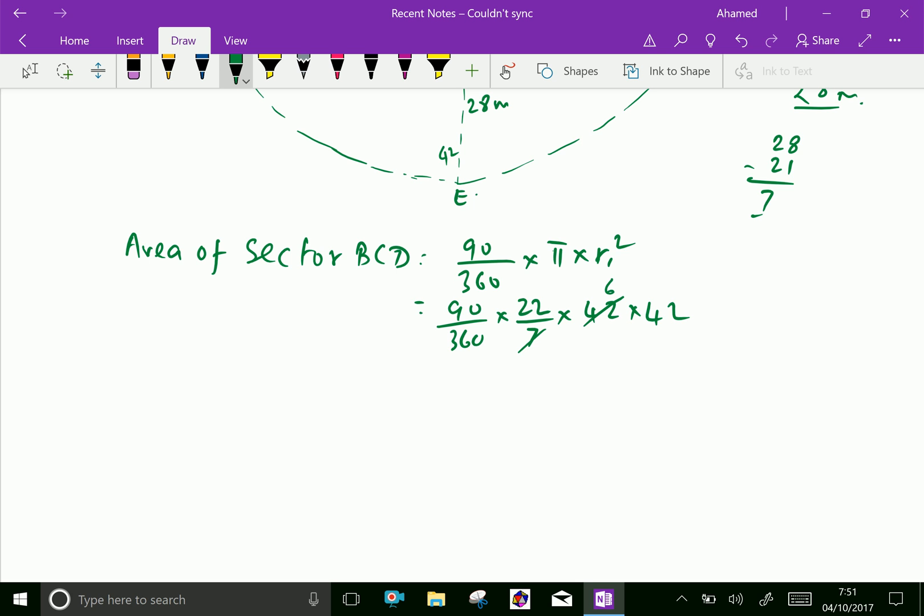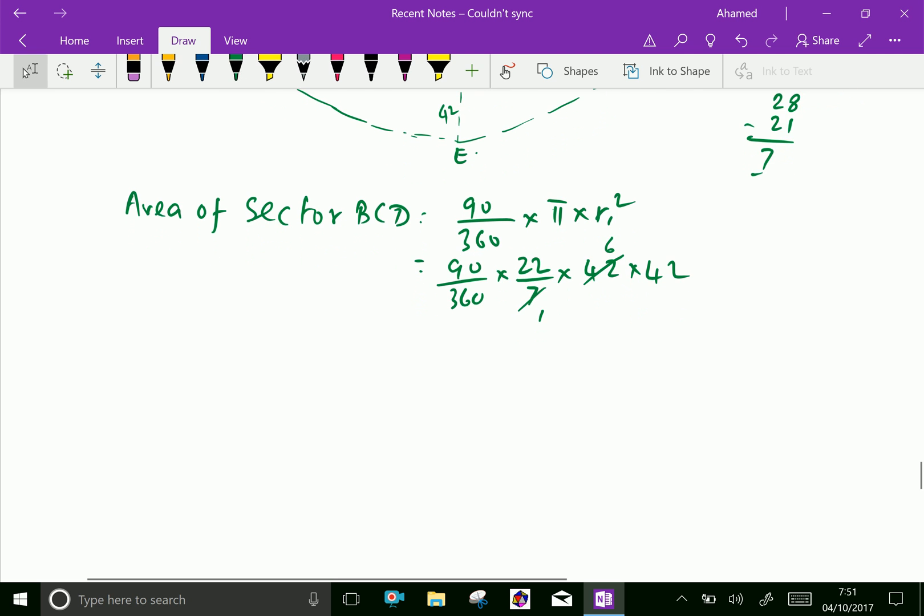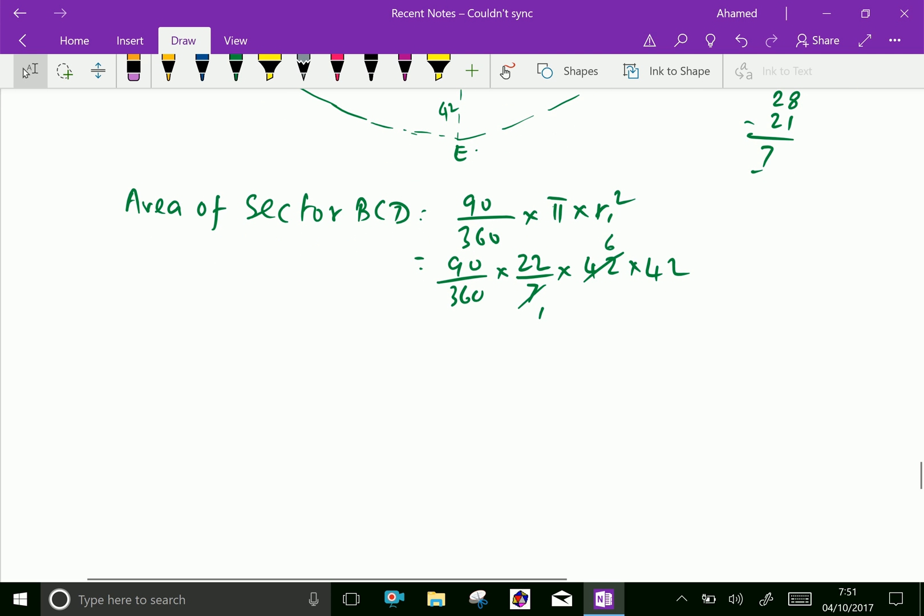This is a quarter circle. Cut as 6 and 1. Now, calculate 90 into 22 into 6 into 42 divided by 360 gives 1386 meter square.